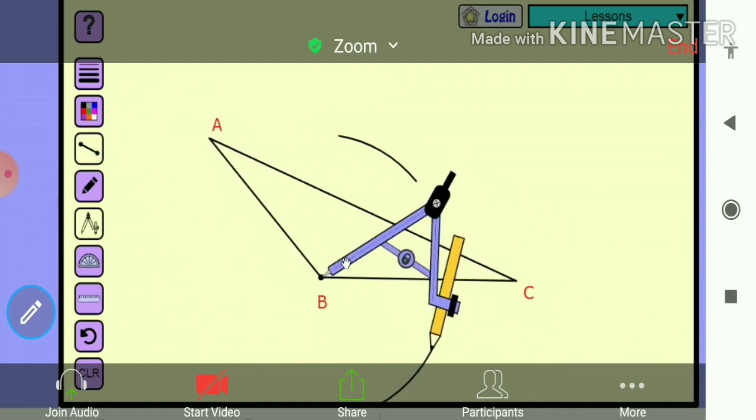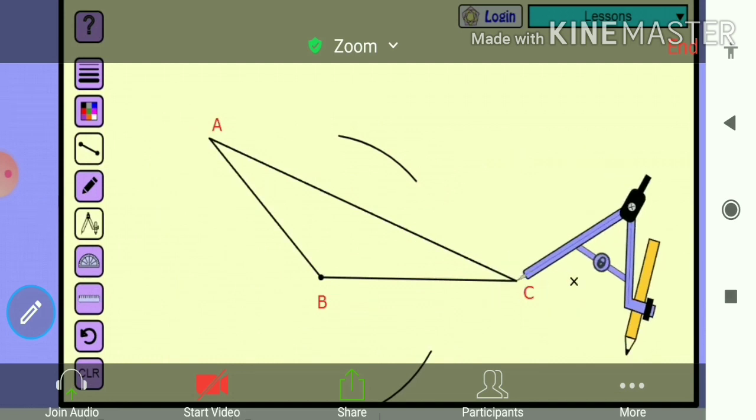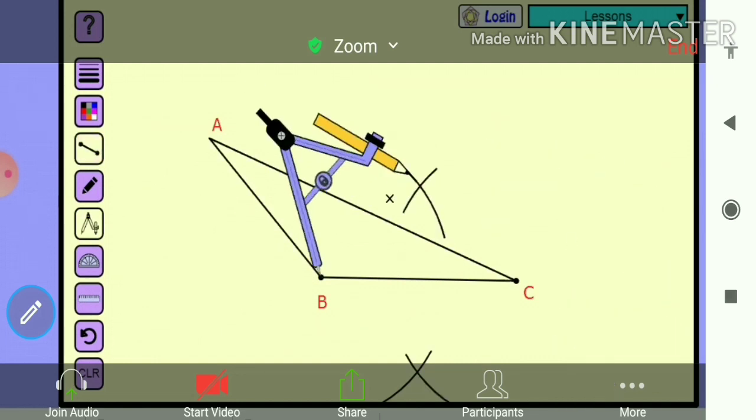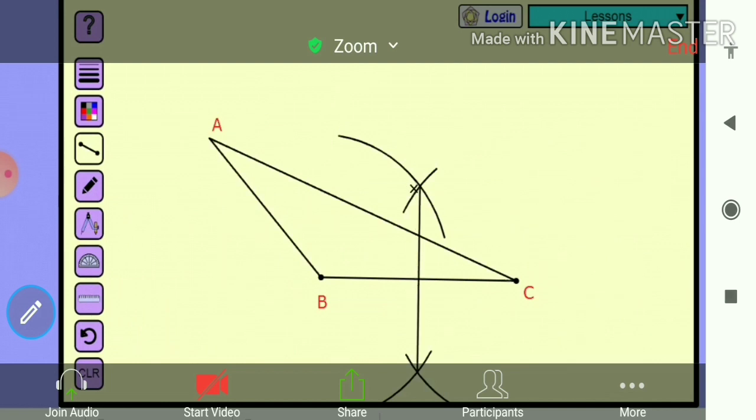Now the same rounder we are going to take on point C with the same distance. We are going to draw the arc. Now we will join these two points with the straight line. Now we'll draw arrows for it. This is your midpoint.